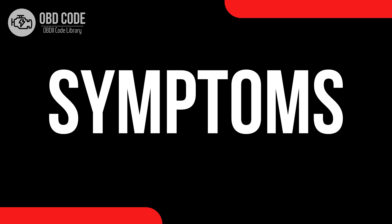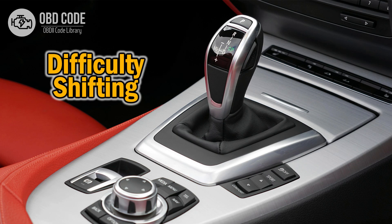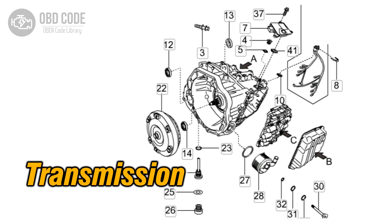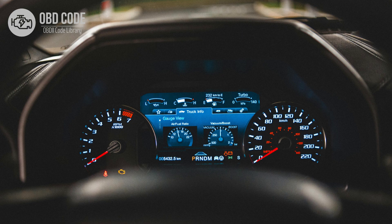Code symptoms P0905: 1. Difficulty shifting gears. 2. Gear selector not responding as expected. 3. Transmission may not engage properly. 4. The check engine light (CEL) may be illuminated.